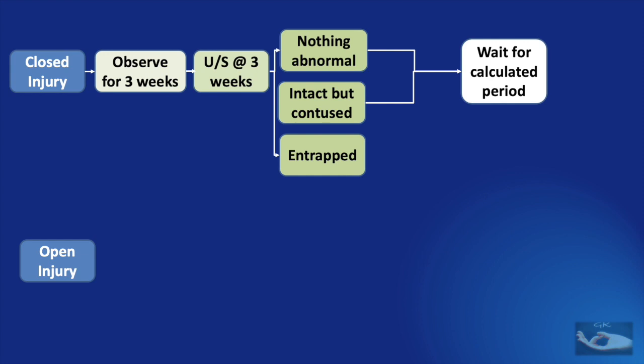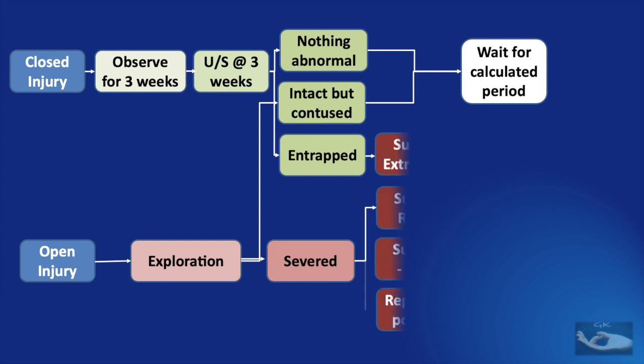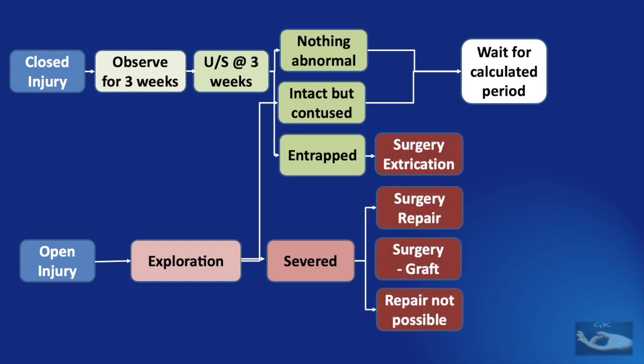If nothing abnormal is detected on ultrasound or the nerve appears intact but only contused, we need to wait for the calculated period for nerve growth and re-innervation of the proximal-most muscle. On the other hand, if it is an open injury with radial nerve palsy, we definitely need to go in for an exploratory procedure. On exploration, we may find the nerve intact but only contused, entrapped in an associated fracture, or completely severed. If intact but contused, we only need to wait. If entrapped, we need to extricate it from the fracture site. If completely severed, we need to do either a repair or, if there is a gap between the cut ends, a nerve graft.